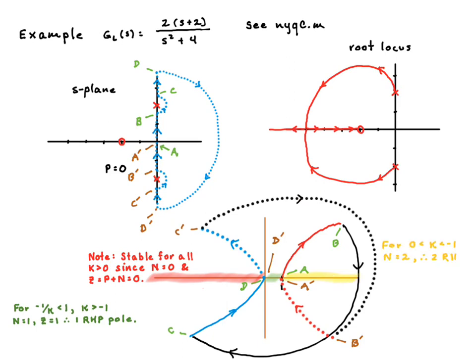And so 1 right half plane pole. And now we go out here for values of K that are larger than negative 1, which means they're between 0 and negative 1. And when we put the ray on here, we have two encirclements, and so two right half plane poles. There you go. So the only way to make this system stable is to make K positive.